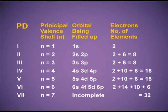Sixth period: n = 6; orbitals filled are 6s, 4f, 5d and 6p. The s orbital accommodates 2 electrons, f accommodates 14 electrons, d orbital has 10 electrons, and p has 6 electrons — in total 32 electrons, giving 32 elements in the sixth period. Seventh period is still incomplete.